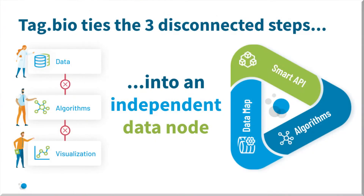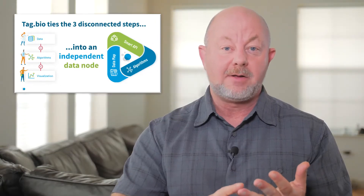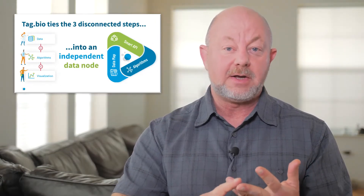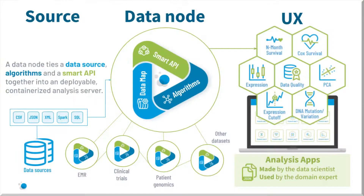The way that we approach this is to bring those three elements together into one common underlying architecture, which we're calling a node — simply a node which corresponds to data, algorithms, and a smart API. And when we think about this, as you can see in this diagram, what we're really looking at is enabling data to be present for an end user to question it.